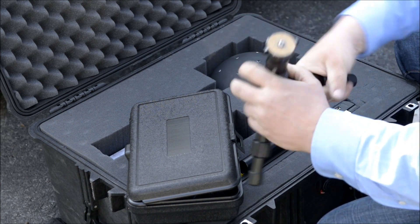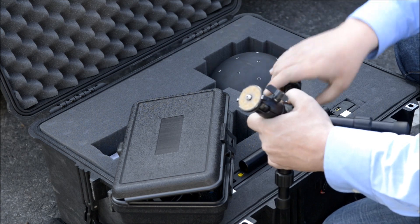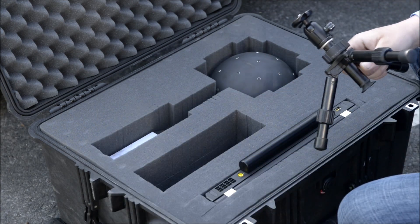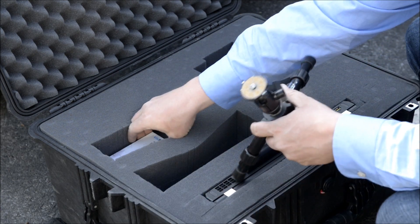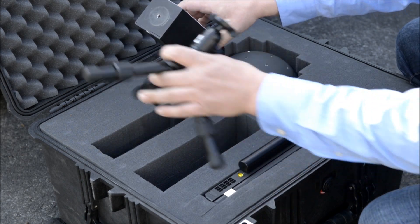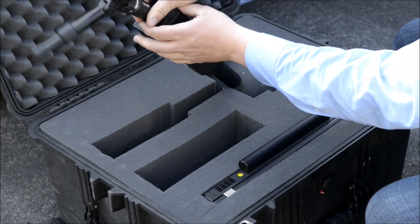The first step to removing the audio camera from the case is to connect the tripod to the base of the audio camera. The audio camera can be mounted on any standard tripod with a 1.25 bolt at the top.